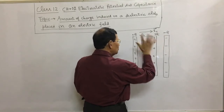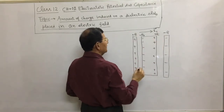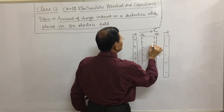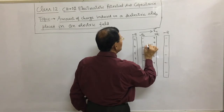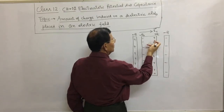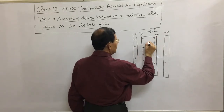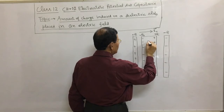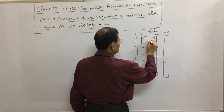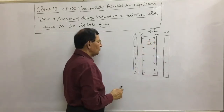Due to the induced charges on the dielectric, an induced electric field Ei is also set up. The direction of Ei is from the induced positive charge towards the induced negative charge — that is, opposite to E0.